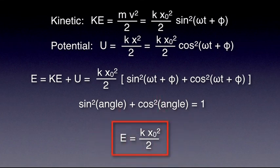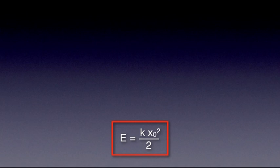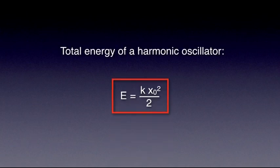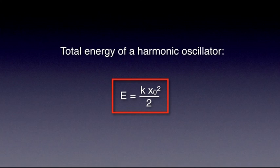Two remarks. First, the total energy is a constant, as it does not depend on time. x0 here is the amplitude of oscillation, which is a constant for a particular oscillator. The second remark: total energy of a simple harmonic oscillator is proportional to the square of its amplitude. That means that if you double the amplitude of oscillation, the total energy increases four times.